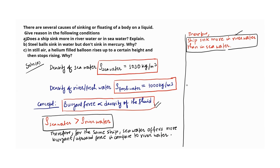Now for B: steel balls sink in water but don't sink in mercury. Why? In order to explain this, we have density of mercury — let us denote it by rho Hg. So this is density of mercury, and in SI system it is 13.6 × 10³ kg per meter cube.